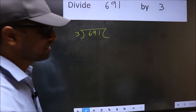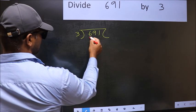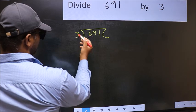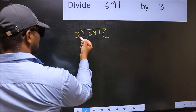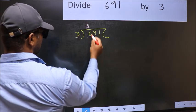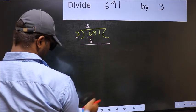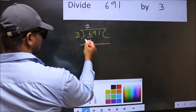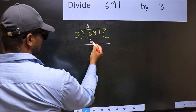Next, here we have 6 and here 3. When do we get 6 in 3 table? 3 times 2 is 6. Now you should subtract. 6 minus 6, 0.